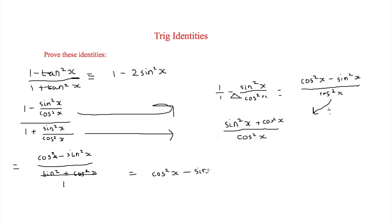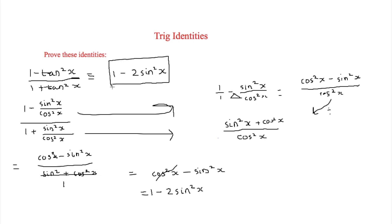Since sine squared x plus cos squared x equals one, the denominator cancels and is replaced with one, leaving just cos squared x minus sine squared x. We're trying to get this into the form one minus two sine squared x. We substitute cos squared x with one minus sine squared x, since cos squared x plus sine squared x equals one. So one minus sine squared x minus another sine squared x equals one minus two sine squared x, which is exactly what we were trying to prove.